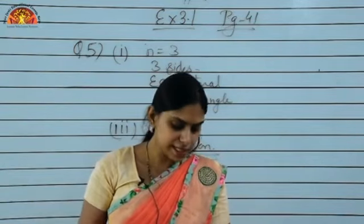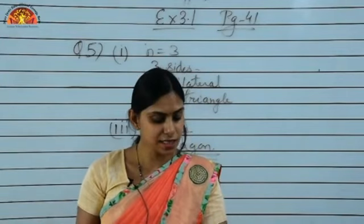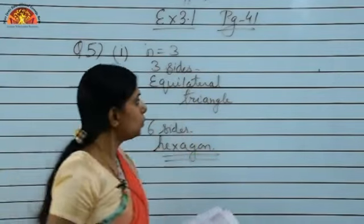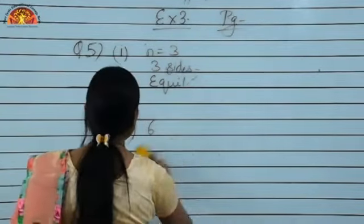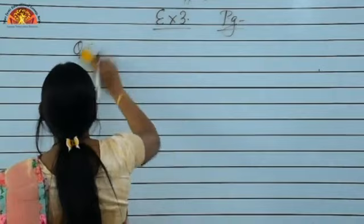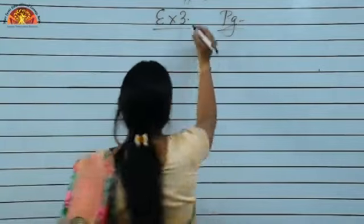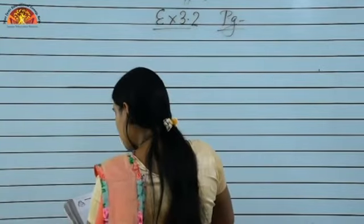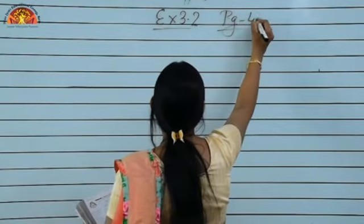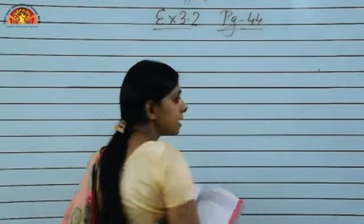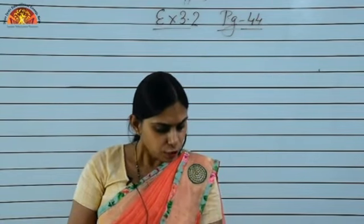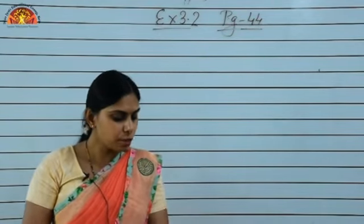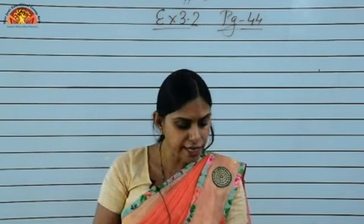Please move to exercise 3.2. Turn your pages to page number 44. Question number 1: Find x in the following figures — you have to determine the value of the unknown variable x.